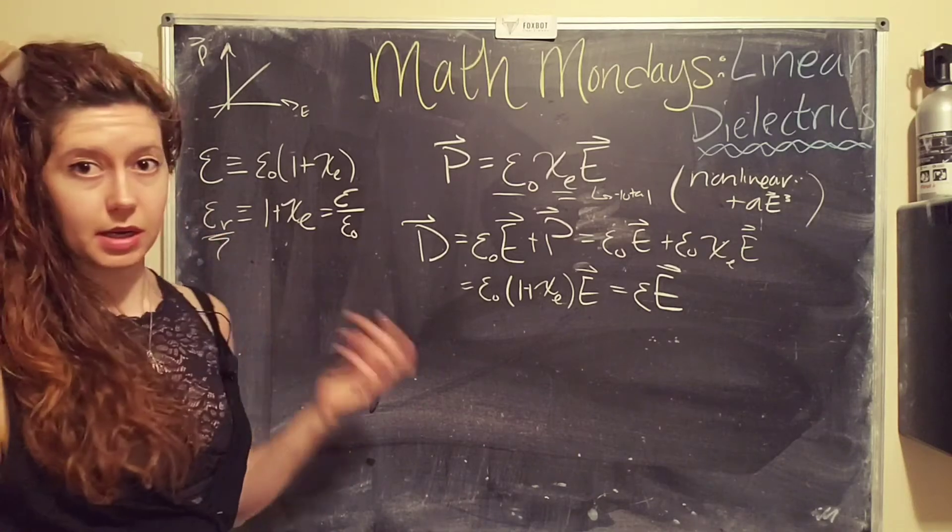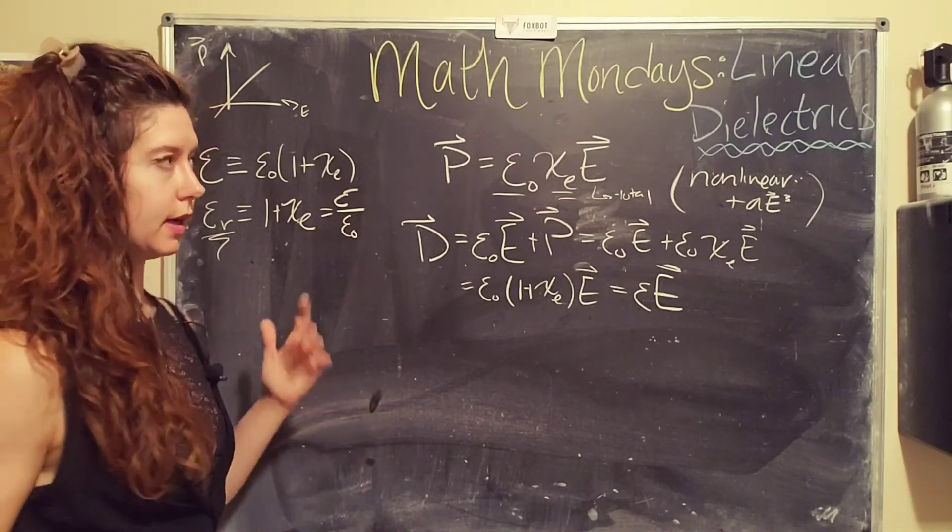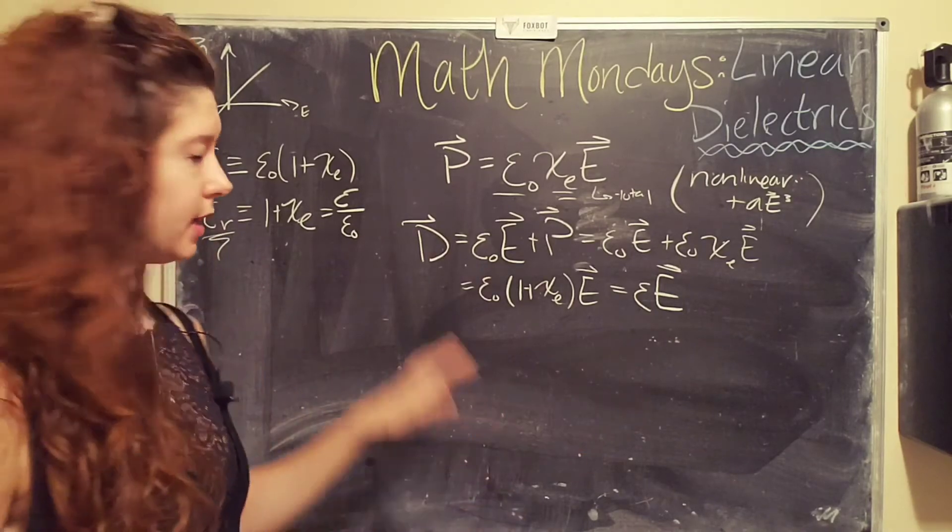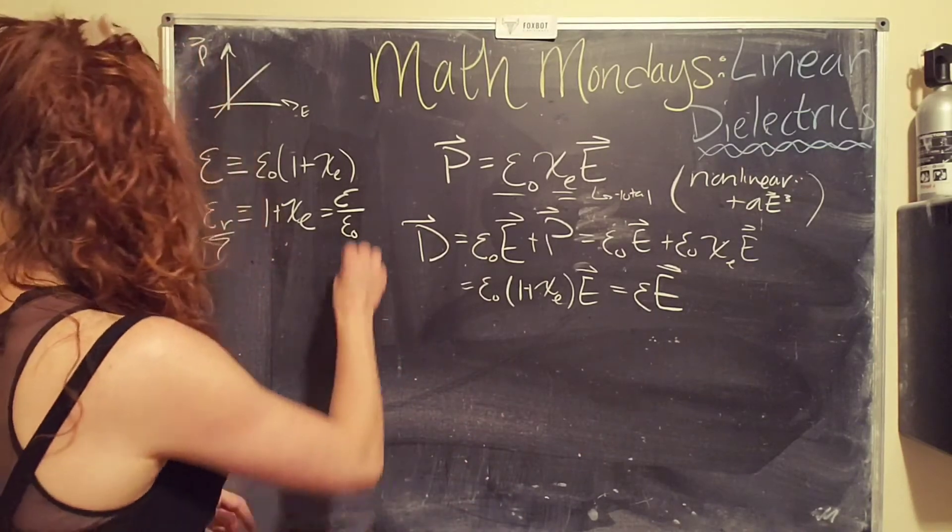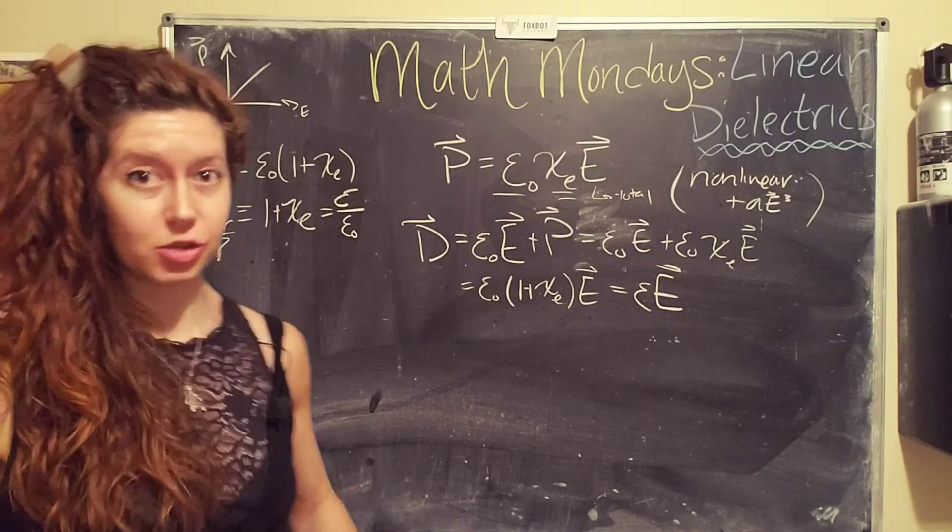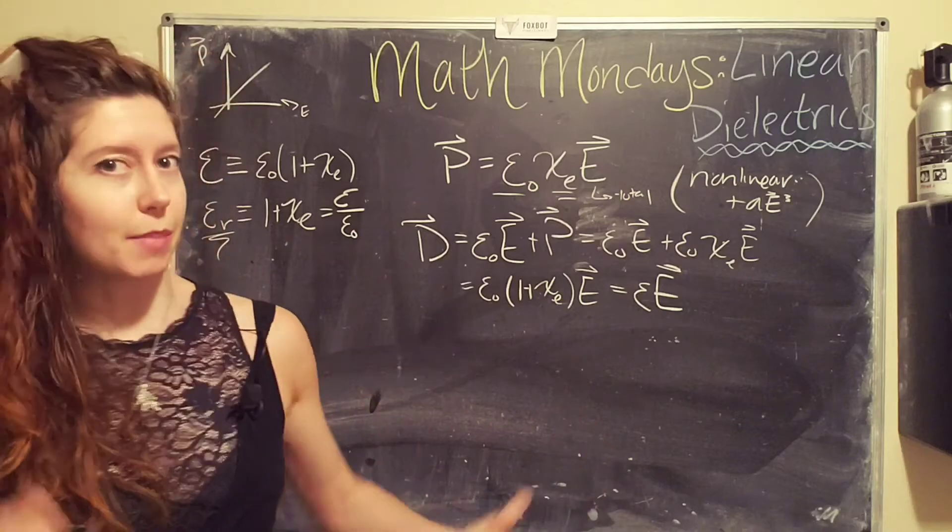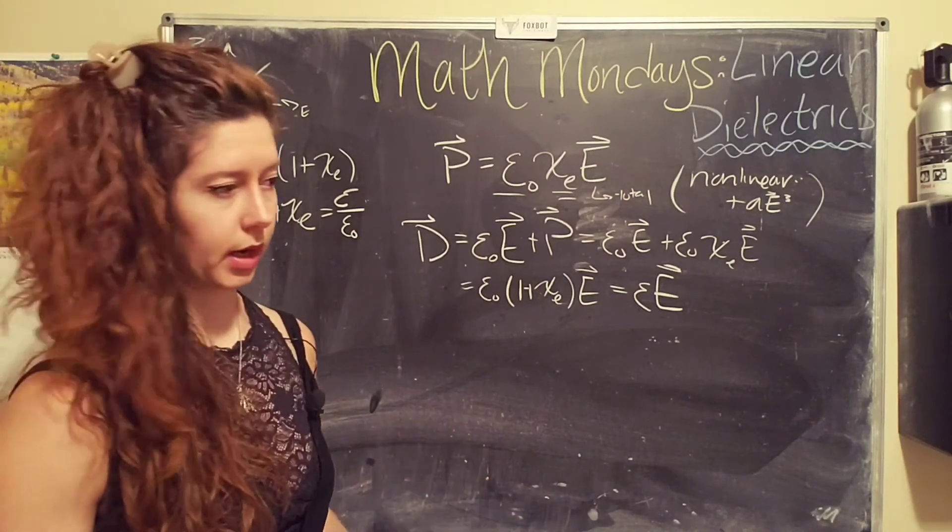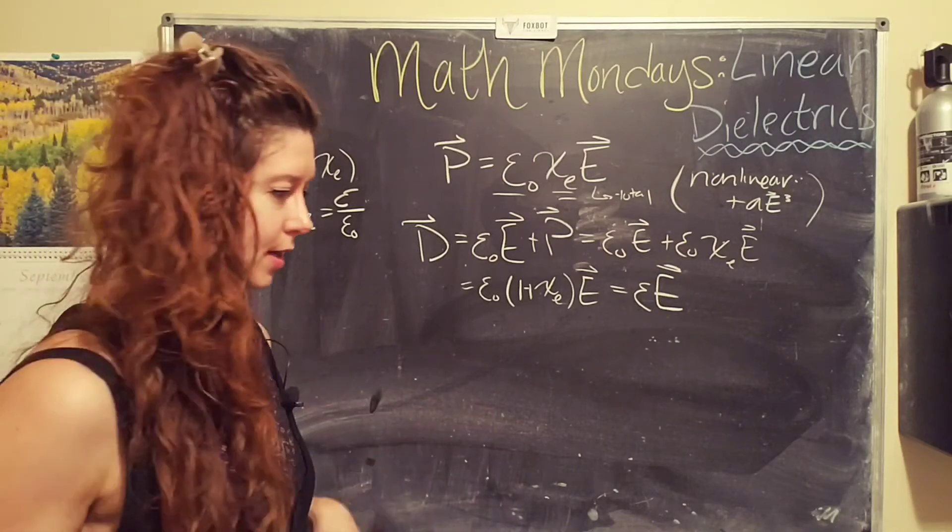And this is kind of nice because it kind of mostly just depends on the material that we're looking at instead of also the vacuum permittivity. And it also kind of gives you this interesting ratio. This is also called the dielectric constant. So that might be a more familiar term to you. It's typically what I see when I am doing researchy things.